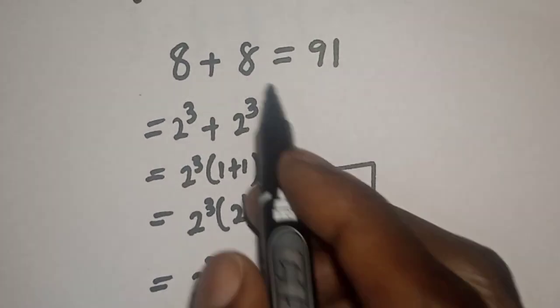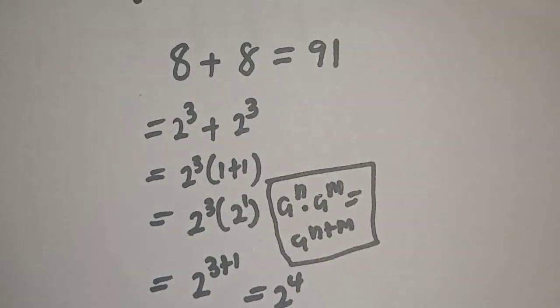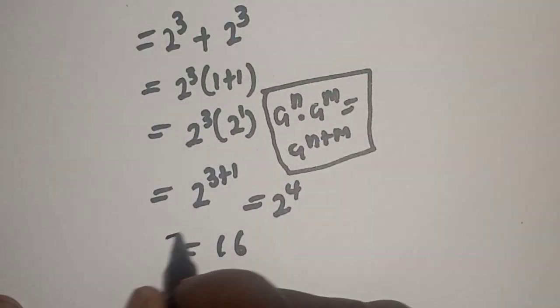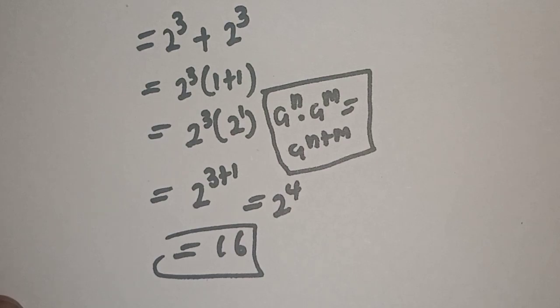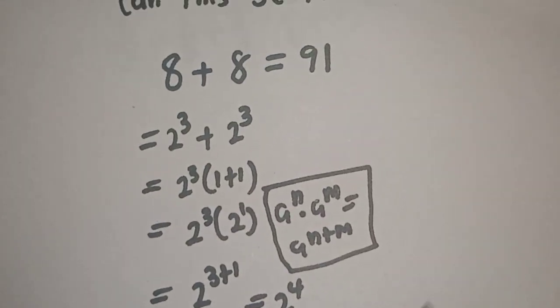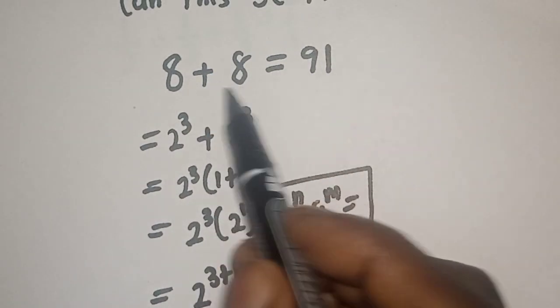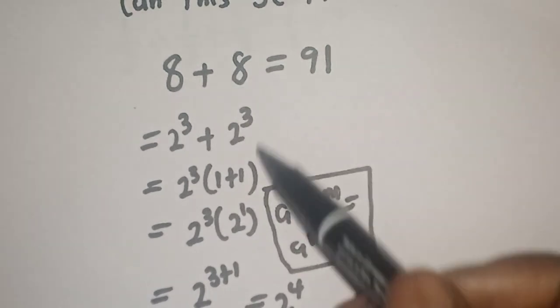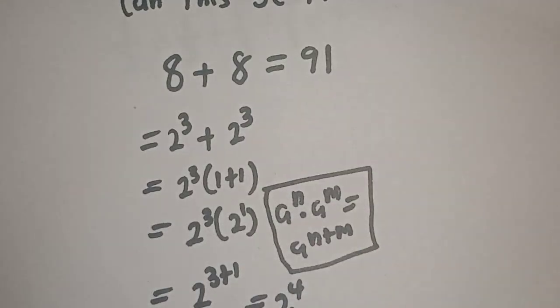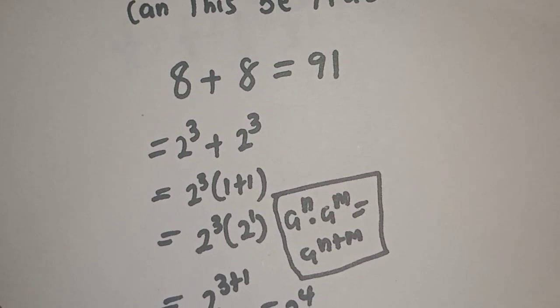But this question says 8 plus 8 is 91. And the answer we got here is 16. Let's see how that is going to be possible. We are going to perform a trick here now. And the only way this can be possible is by turning this upside down. Let's turn it upside down and see if we are going to get the answer.